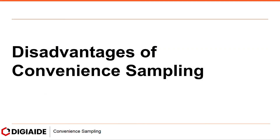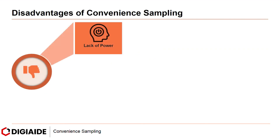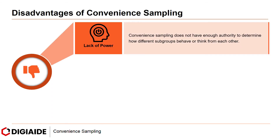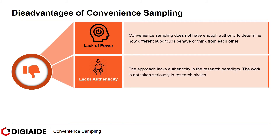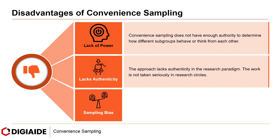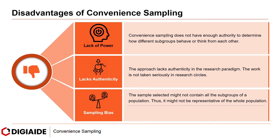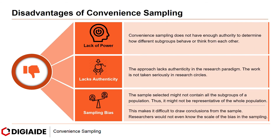And finally, the disadvantages of Convenience Sampling. First: lack of power — convenience sampling does not have enough authority to determine how different subgroups behave or think from each other. Next: lacks authenticity — the approach lacks authenticity as a research paradigm, and the work is not taken seriously in research circles. And most importantly: sampling bias — the sample selected might not contain all the subgroups of a population, and thus might not be representative of the whole population. This makes it difficult to draw conclusions from the sample, and researchers would not even know the scale of the bias in the sampling. The sample is thus only representative of itself.